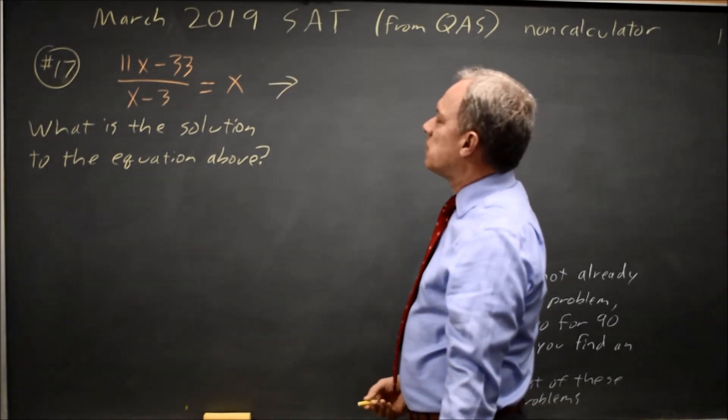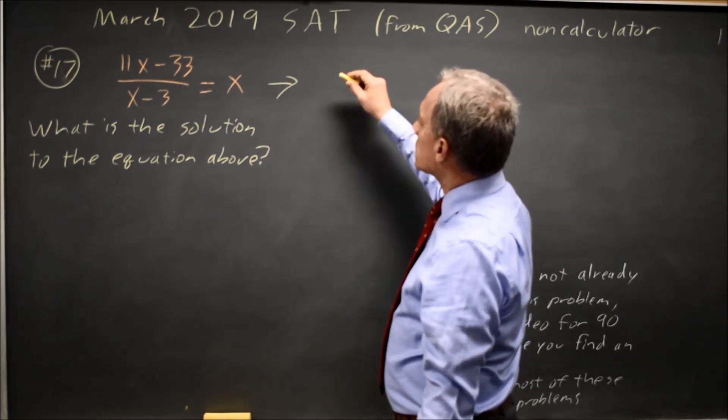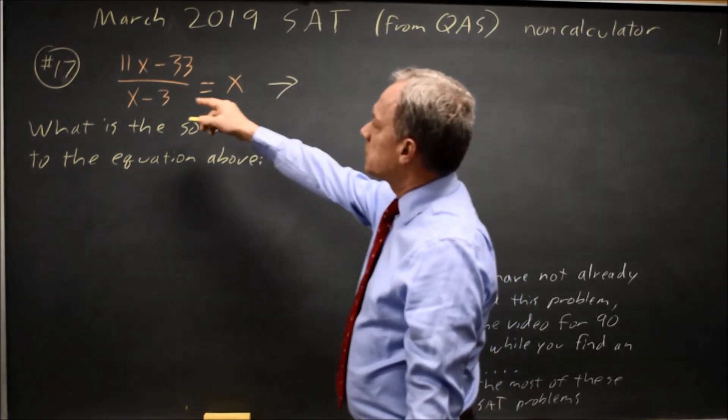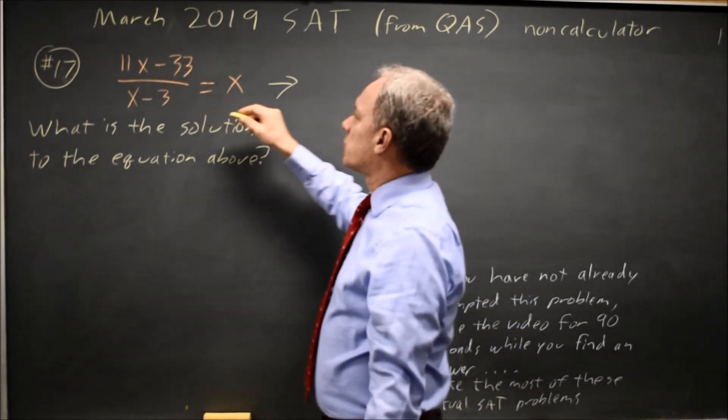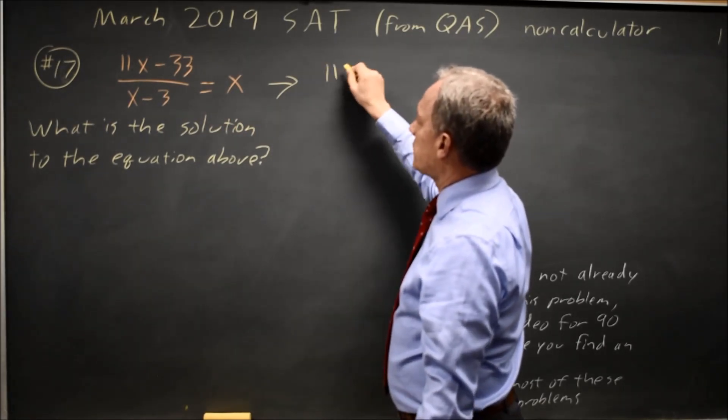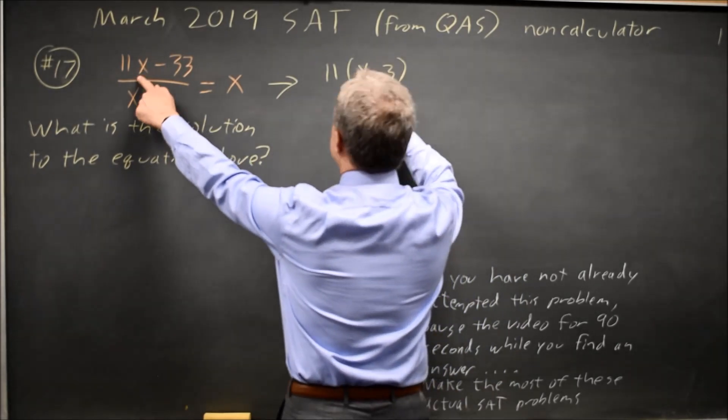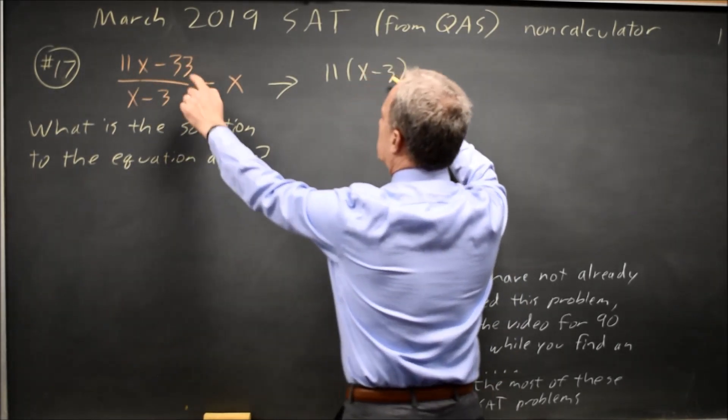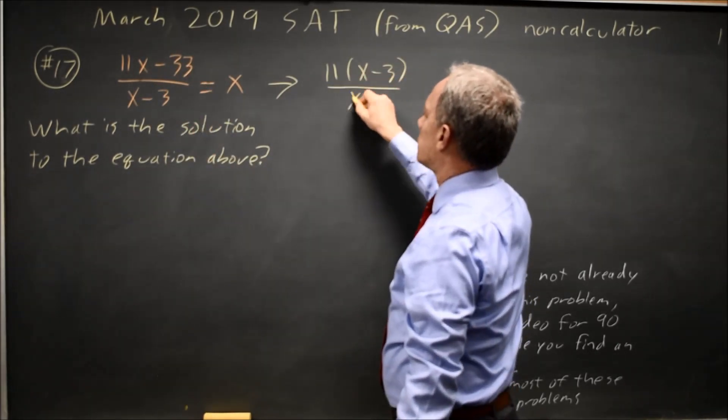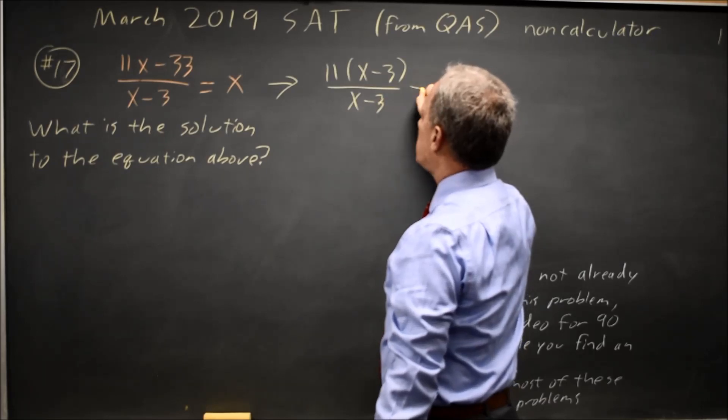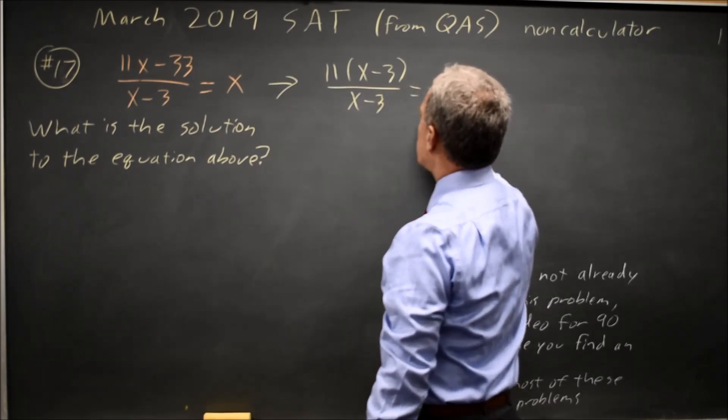Since we're finding the solution, most of the shortcuts don't work, so I will notice 11 and 33 have a common factor of 11. So that's 11 times x minus 3, because 11 times x is 11x and 11 times negative 3 is negative 33, over x minus 3, and that expression is equal to x.